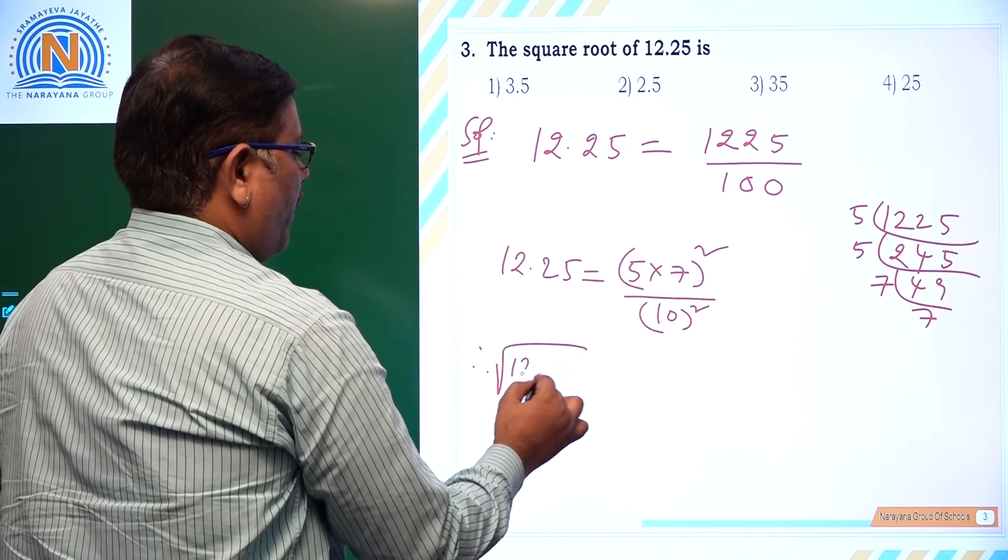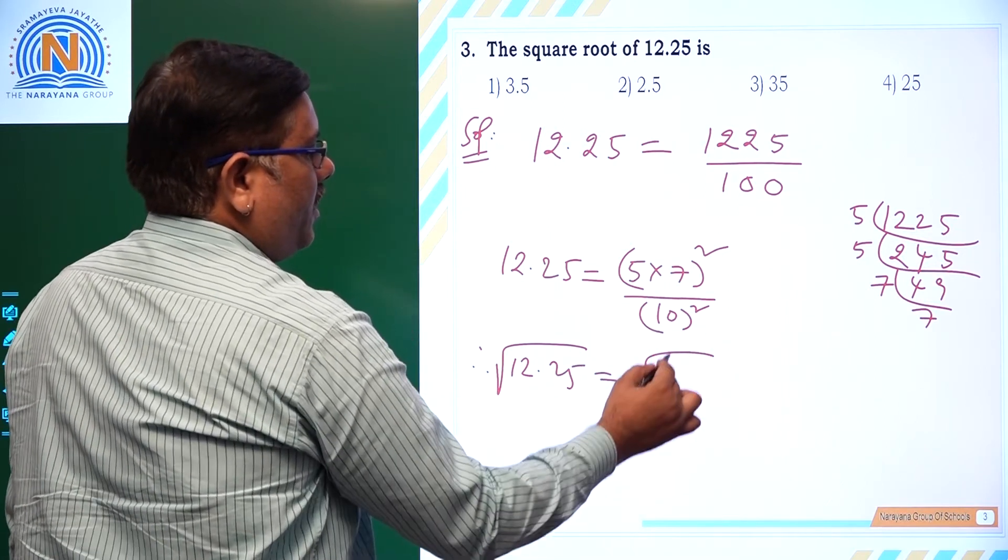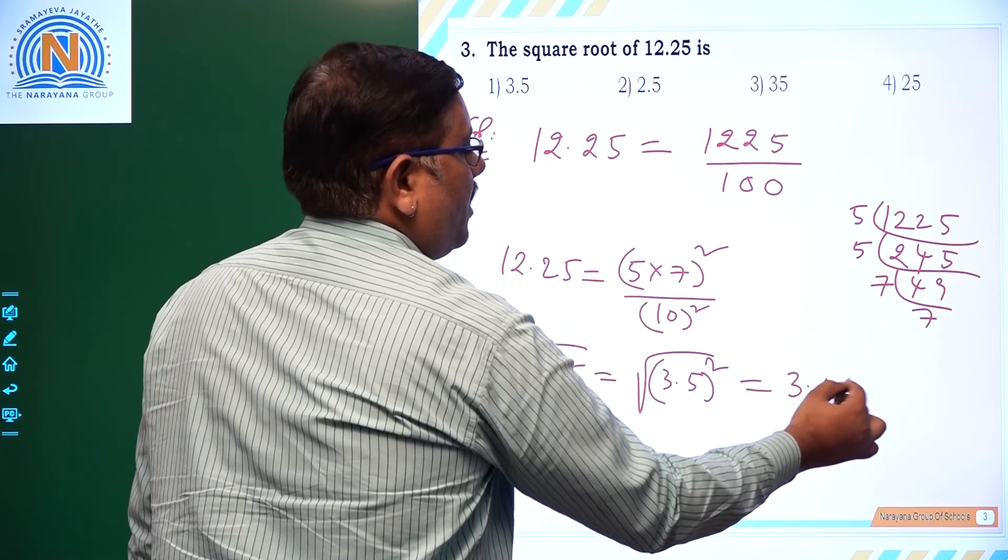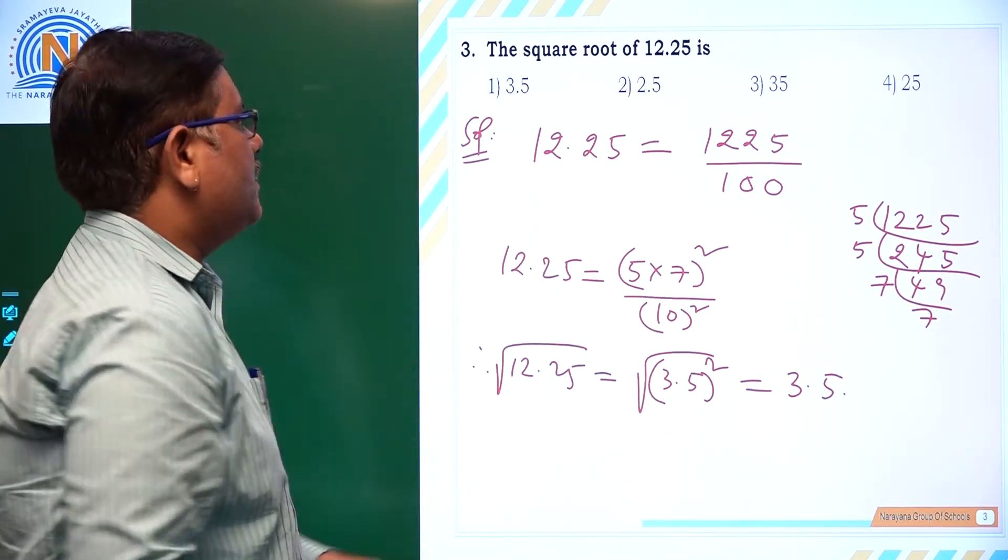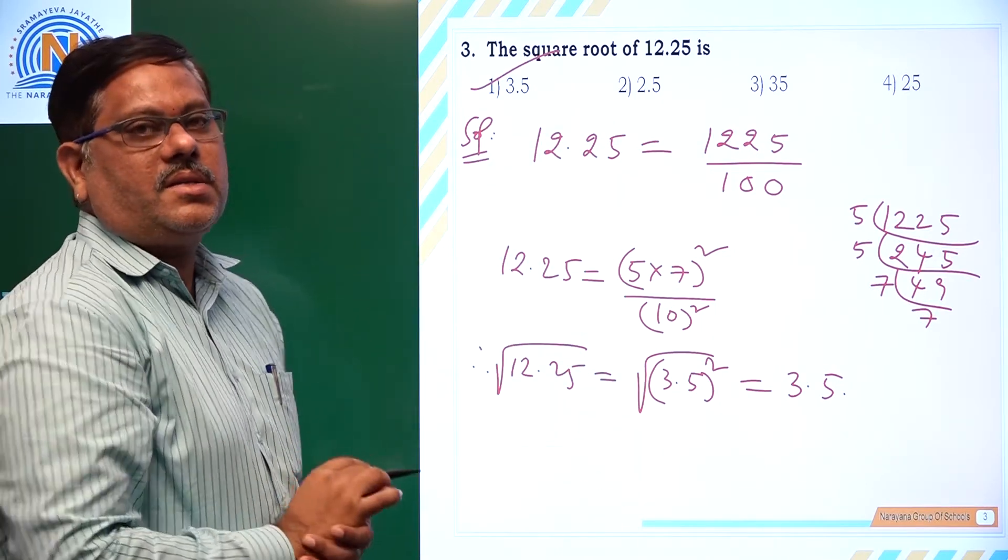Therefore, under root of 12.25, that is going to be under root of 35 by 10, that is 3.5 whole square. So that is 3.5 for us. That is the right answer. First option we have as 3.5, so that is the right answer.